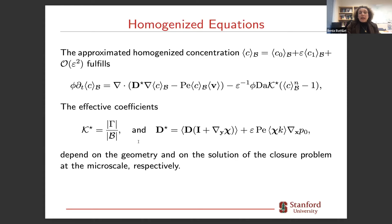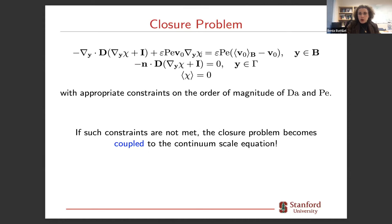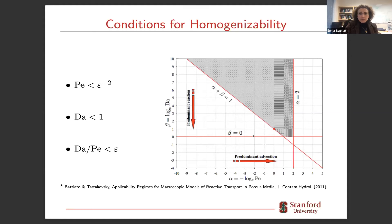Multiple-scale expansion represents pore-scale quantities in terms of fast and slow variables, performs asymptotic expansion matching like powers of epsilon, and yields a homogenized equation with corresponding effective parameters — the dispersion coefficient as a function of the closure variable. Interestingly, we could obtain the closure problem — needed to separate scales — only under appropriate constraints on the order of magnitude of relevant dimensionless numbers: the Damköhler and Péclet numbers. If these constraints were not satisfied, the closure problem became fully coupled to the pore-scale problem, meaning you cannot separate scales or write an upscaled equation with single-point closure approximations.